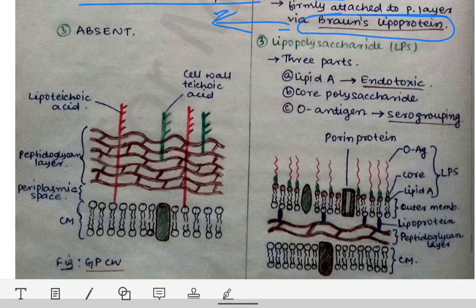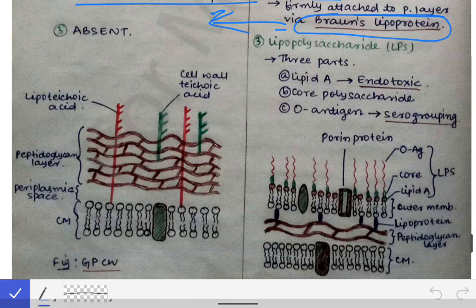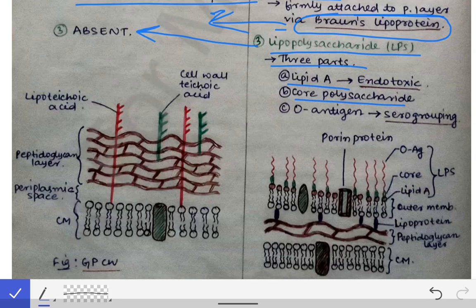The third point is the lipopolysaccharide (LPS) layer, which is present in gram-negative bacteria but absent in gram-positive bacteria. LPS has three parts: Lipid A, the core polysaccharide, and O-antigen. Lipid A is endotoxic, and O-antigen is helpful in serogrouping — which has been explained in the enteric fever chapter. These are the important points about lipopolysaccharide in the gram-negative bacterial cell wall.